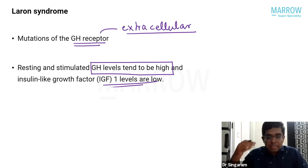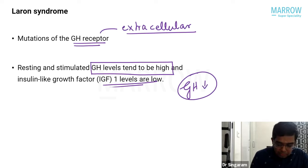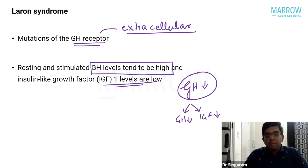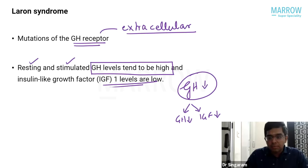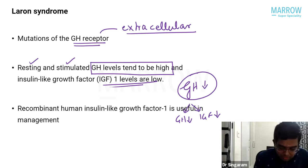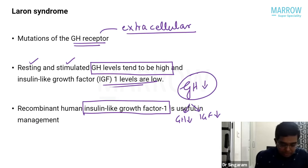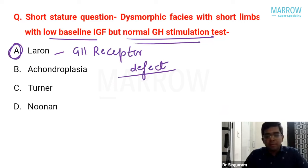In typical growth hormone deficiency, both IGF-1 and growth hormone levels are low. In Laron syndrome, growth hormone is high but IGF-1 is low due to receptor resistance. Treatment involves recombinant human IGF-1, known as Mecasermin. Other conditions like achondroplasia, Turner syndrome, and Noonan syndrome are not associated with this growth hormone axis abnormality.